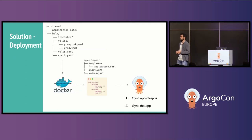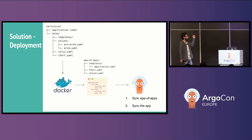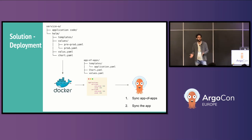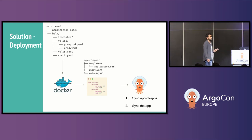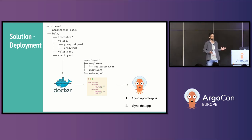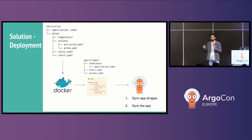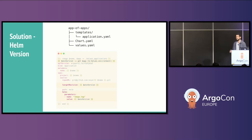Combining this together, we now have only one deployment pipeline, because everything — both the Helm chart and the application code — is inside the same repository. It always builds a Docker image, always changes the right version — once for pre-prod, once for prod. It does two things: it syncs the app-of-apps Application CRD, sets the right image tag parameter, and then syncs the application itself.